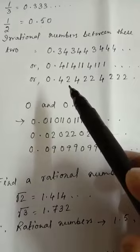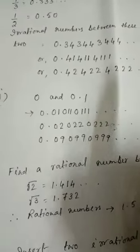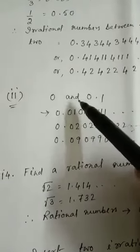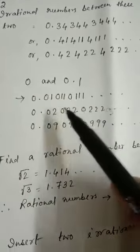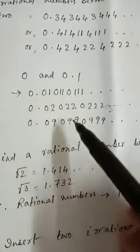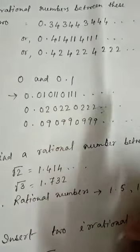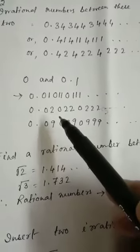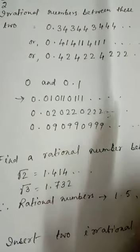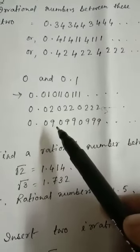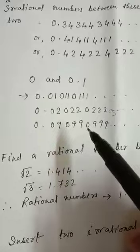Or you can take the number 0.424224222, like this. Next, question number 2 of number 11: you have to find a number between 0 and 0.1. Same way you can take the numbers. You take the first number as 0.0101101111, and it will continue like this. Or 0.02022 02222 this way. Or 0.09 — because the last number is 0.1, so it should be less than that — 0.090990999, like that.